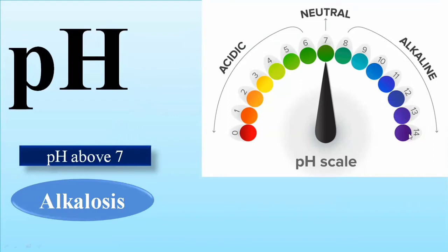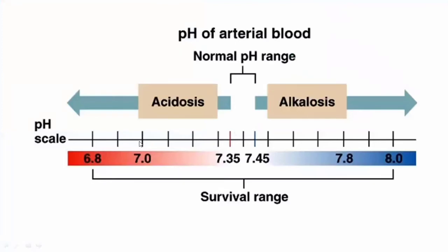The body must maintain the normal pH range for homeostasis and for all physiological activities, to keep organs and systems functioning properly. Slight deviations do occur in the human body. For minimum acidosis or alkalosis, the body can maintain or bear these minor variations. The normal blood pH range is 7.35 to 7.45, and the hydrogen ion concentration must be managed within these amounts.